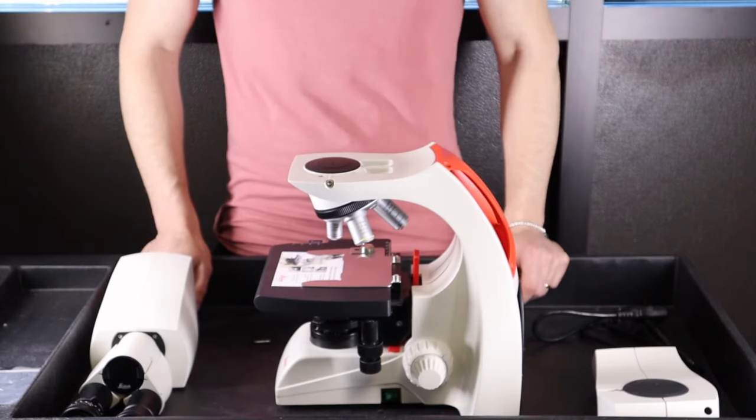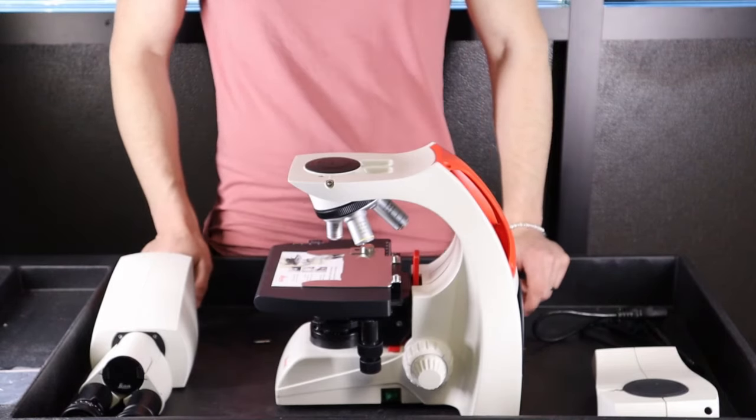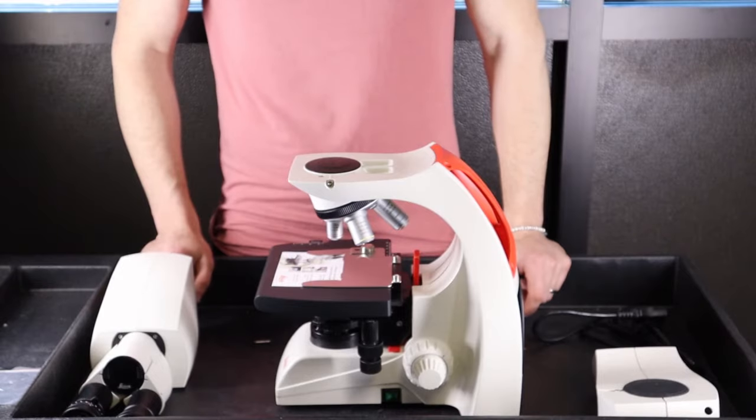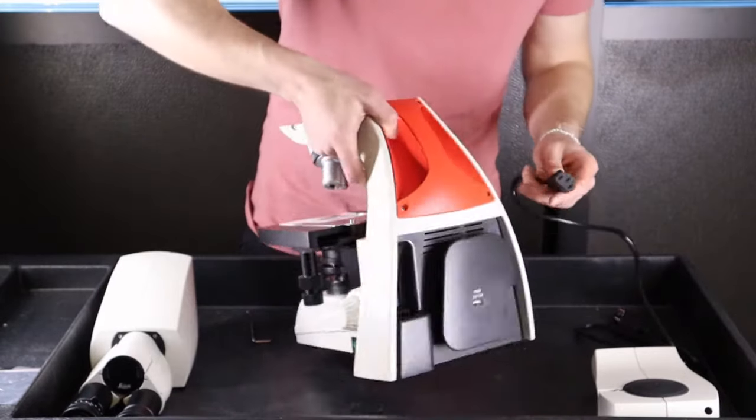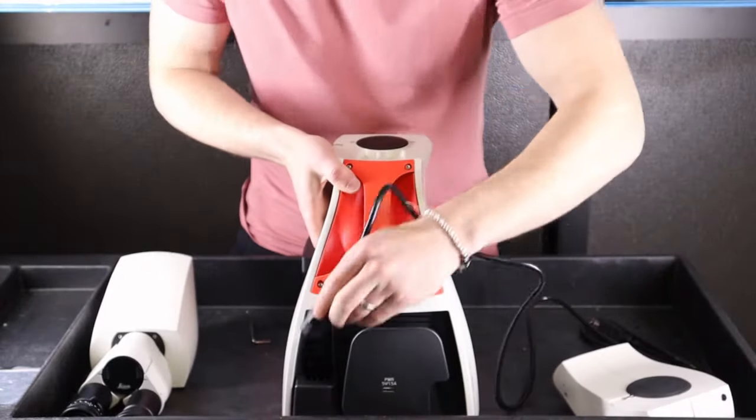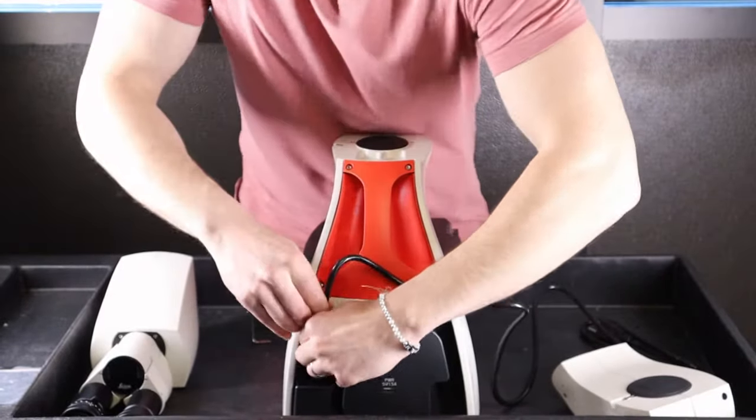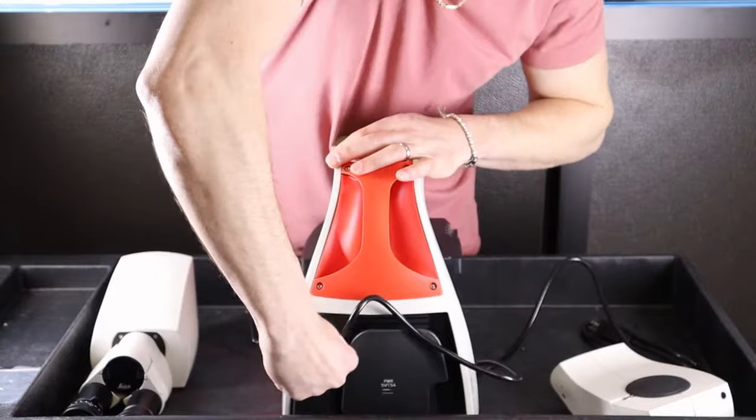This video shows how to assemble your Leica DM750 with your ICC50W camera system. The first step is plugging your microscope in. Take your power cable and push it down into the receptacle.